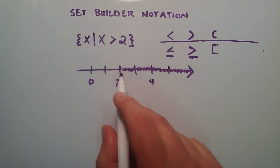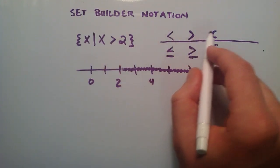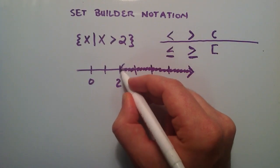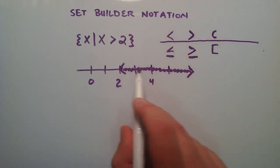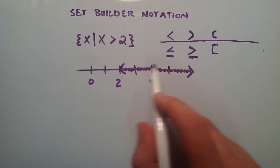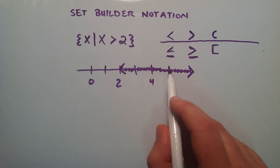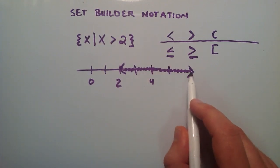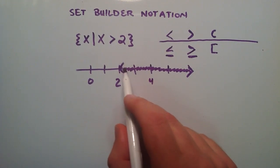So in this case, we're just dealing with the greater than sign, so we use the half circle. Now looking at the graph here, this represents the set that contains all numbers greater than the number 2, but not including the number 2.